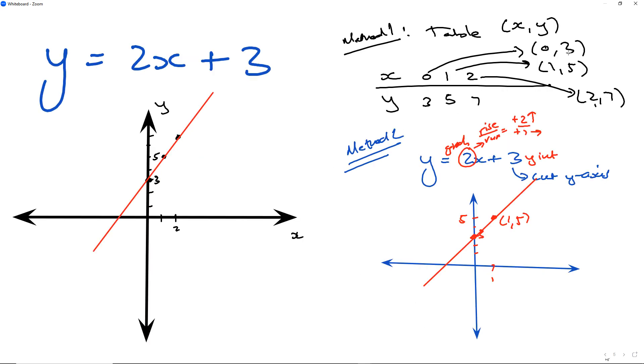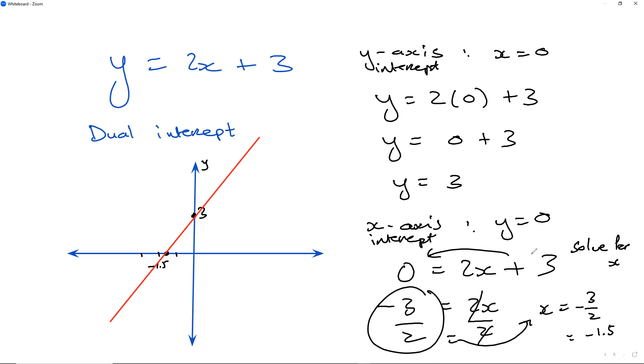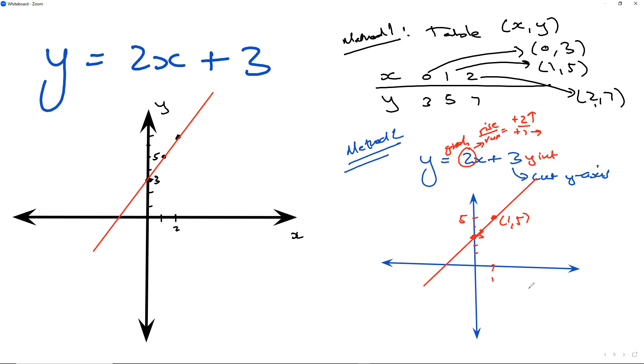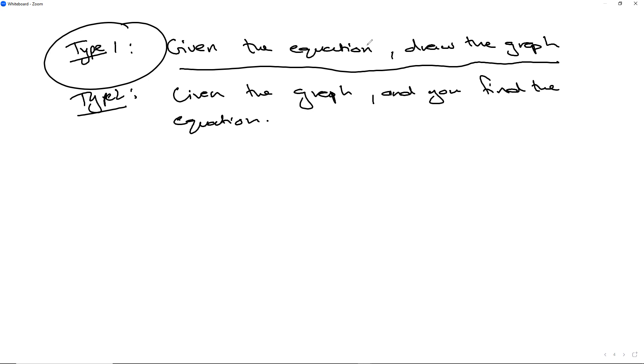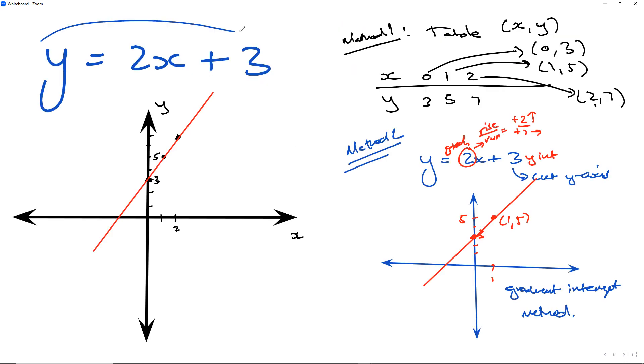So this is the first one, method one, table method and plotting it. Method number two, the gradient intercept method. They should actually call it the intercept gradient method because you first plot the y-intercept and from the y-intercept you use the gradient to get the second point that you need to connect. And this is known as the gradient intercept method. You probably won't get asked to use all the methods, you probably get asked to use one, or you might not get asked at all, just to draw it. So given the equation, drawing the graph, that's how we would do that. There's the equation and those three methods of drawing the graph.